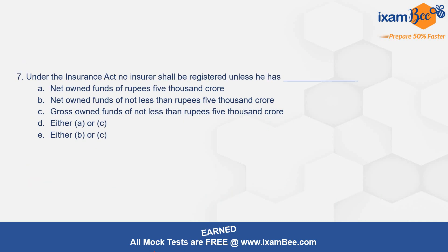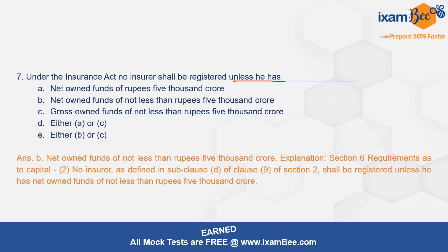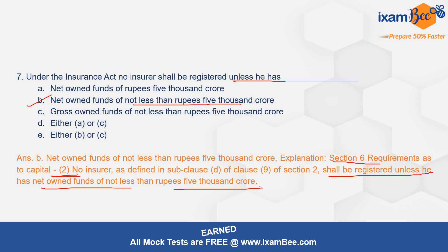Question number 7: under the Insurance Act, no insurer shall be registered unless he has — the correct option is B — a net owned fund of not less than Rs. 5,000 crore. Section 6 on requirements as to capital, subsection 2, states that no insurer shall be registered unless he has a net owned fund of not less than Rs. 5,000 crore.